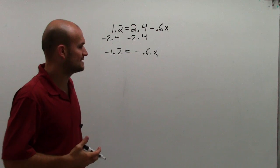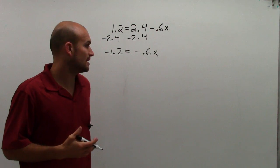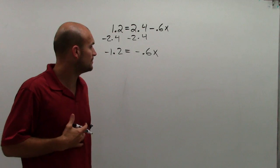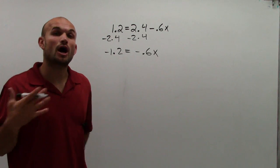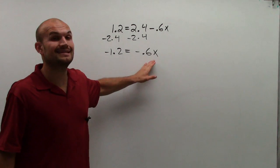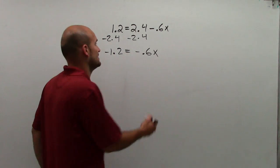So now I need to take a look at it and say, all right, I'm multiplying by negative 0.6. So to undo that operation, because I need to get this variable by itself, I need to find the inverse.